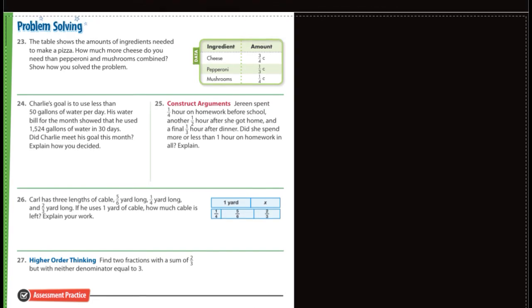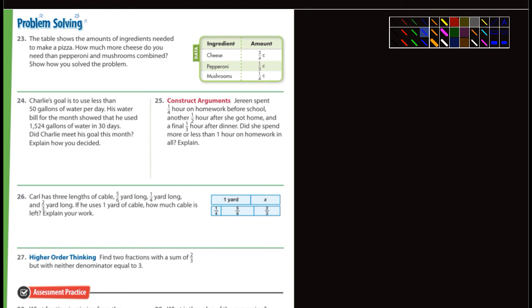Yeah, let's look at the last page here. Problem solving. The table shows the amounts of ingredients you need to make a pizza. How much more cheese do you need than pepperoni and mushrooms combined? Well, first off, we're going to combine the pepperoni and mushrooms. Okay. So take a look here. Here's the pepperoni, a third of a cup, and the mushrooms, a quarter of a cup. So what do you got to do? You got to add one third plus one quarter. Now, the question is, how much more cheese do you need? So then, whatever this answer is, I'll just call it X. We'll call it X. Whatever X ends up being, you're going to subtract that from three quarters to see how much more cheese you can use.